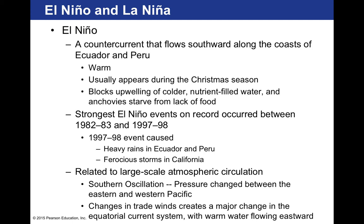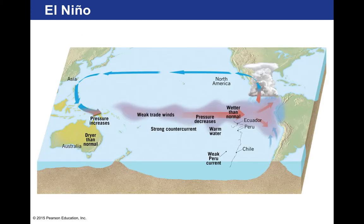El Niño is related to large-scale atmospheric circulation through the Southern Oscillation — a pressure change between the eastern and western Pacific. Changes in the trade winds create a major change in the equatorial current system, with warm water flowing eastward instead of westward. On the western side of the Pacific there are very high pressures and on the eastern side very low pressure, creating a pressure gradient. This pushes trade winds easterly, moving low pressure toward the western coasts of South America and the United States, causing very strong storms during El Niño events.